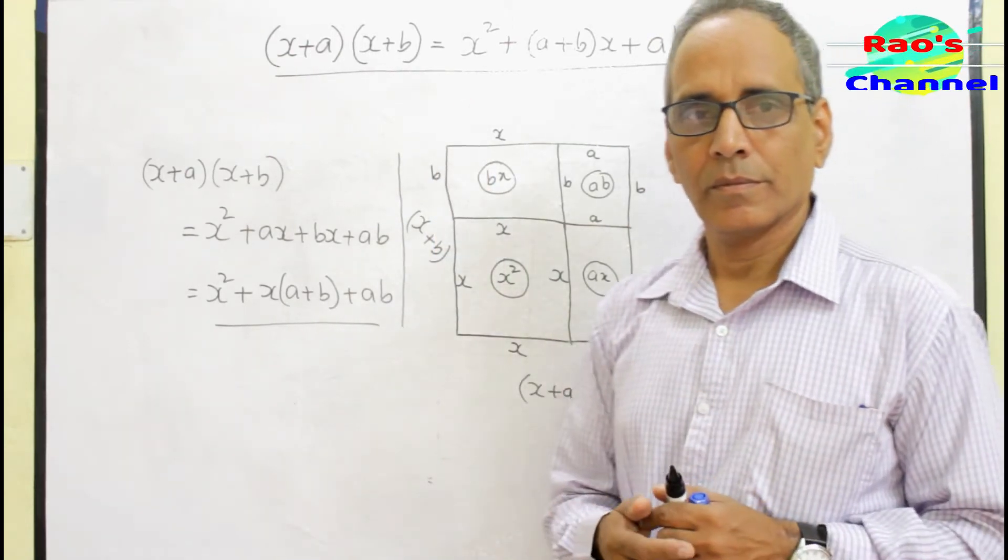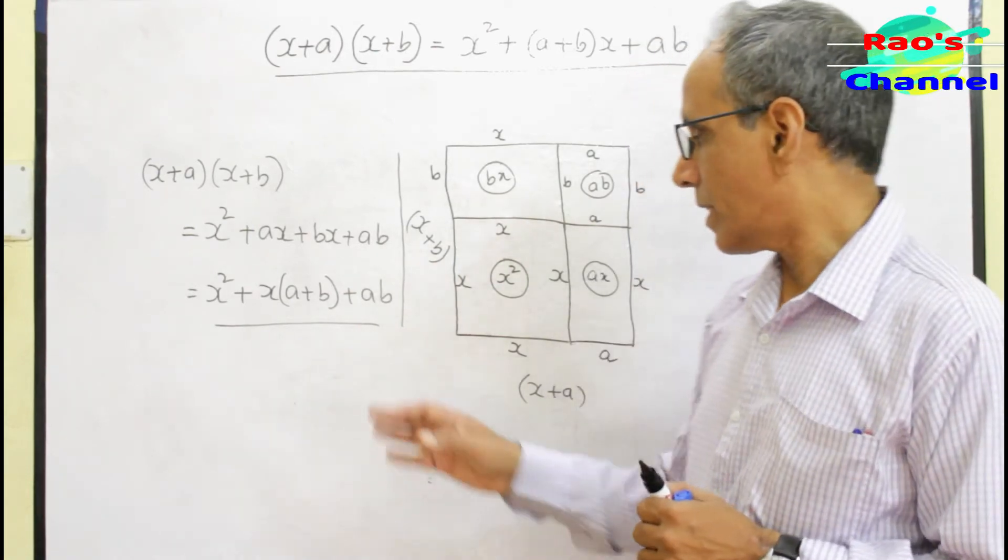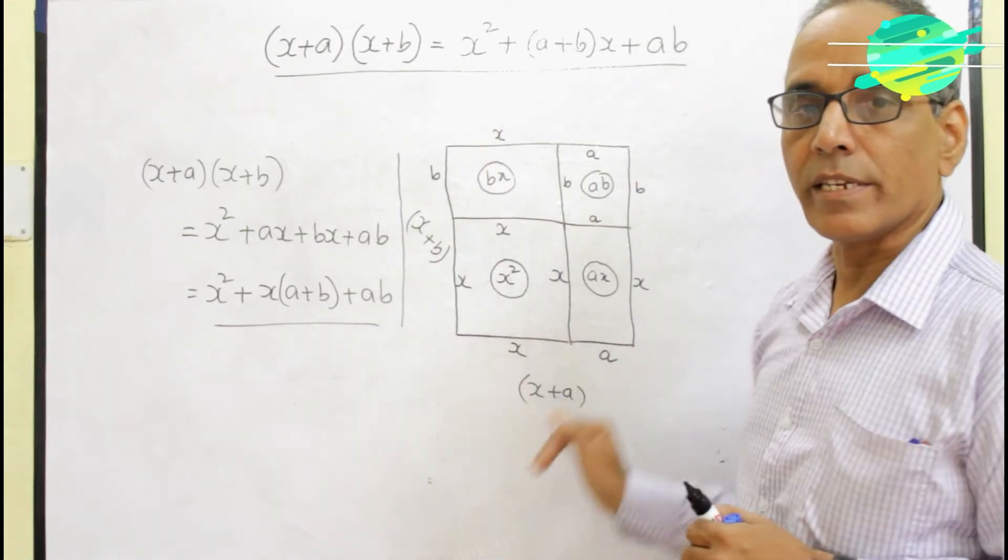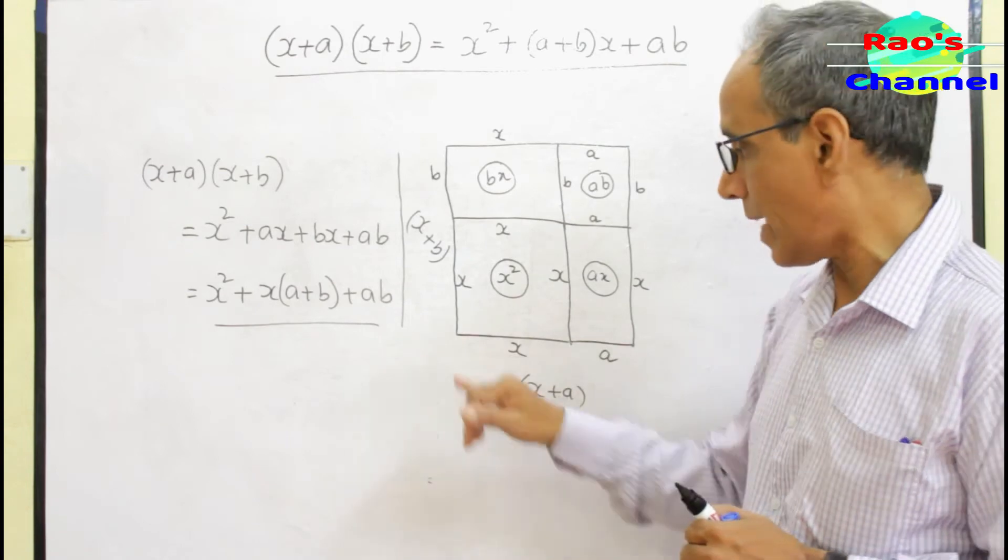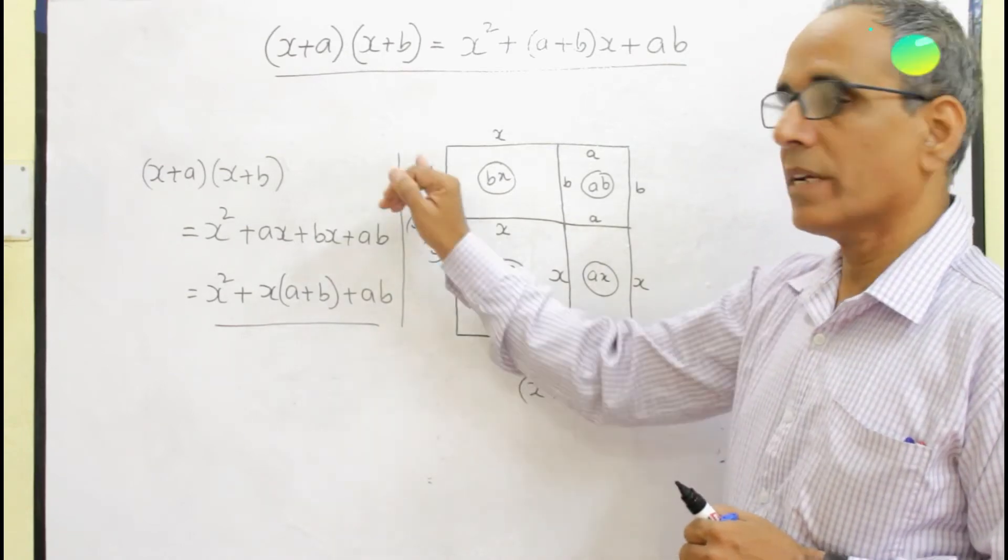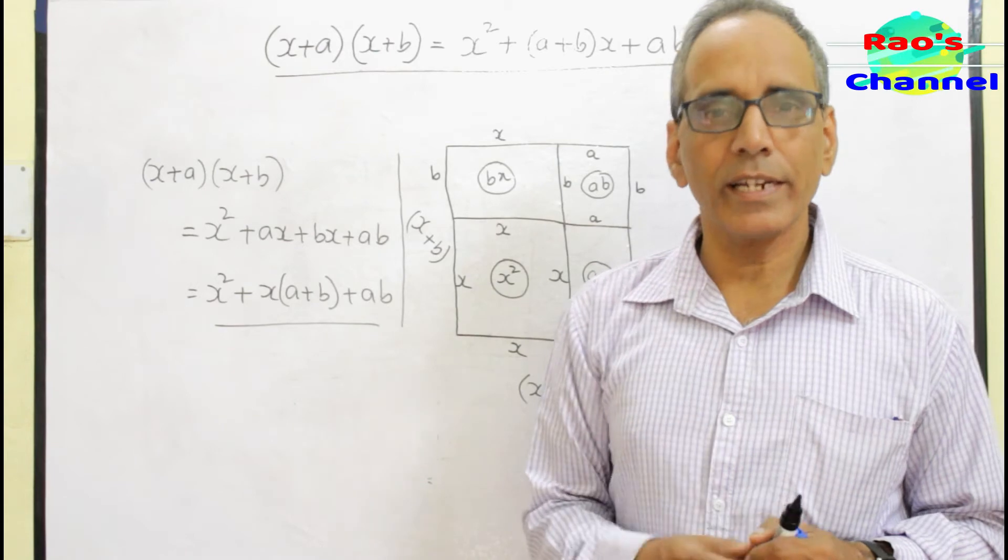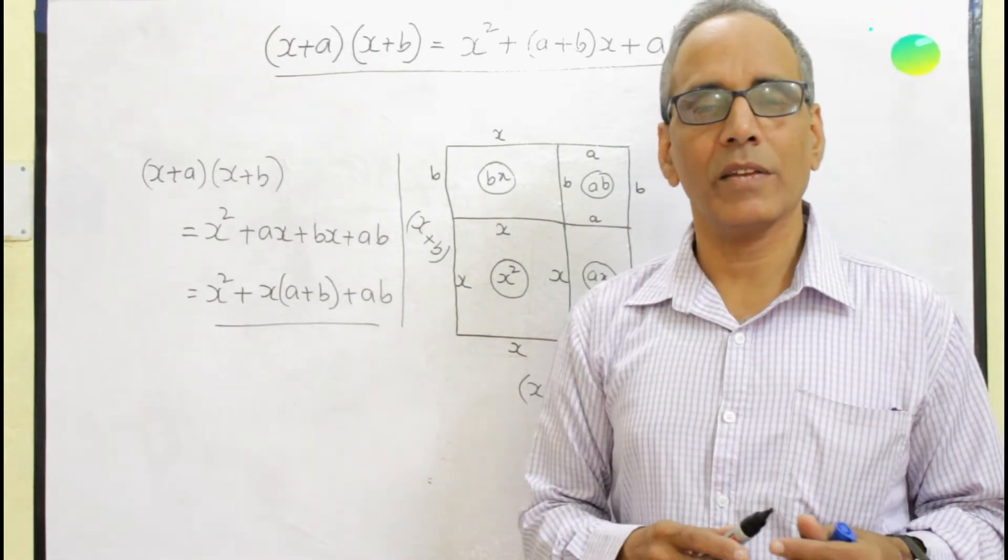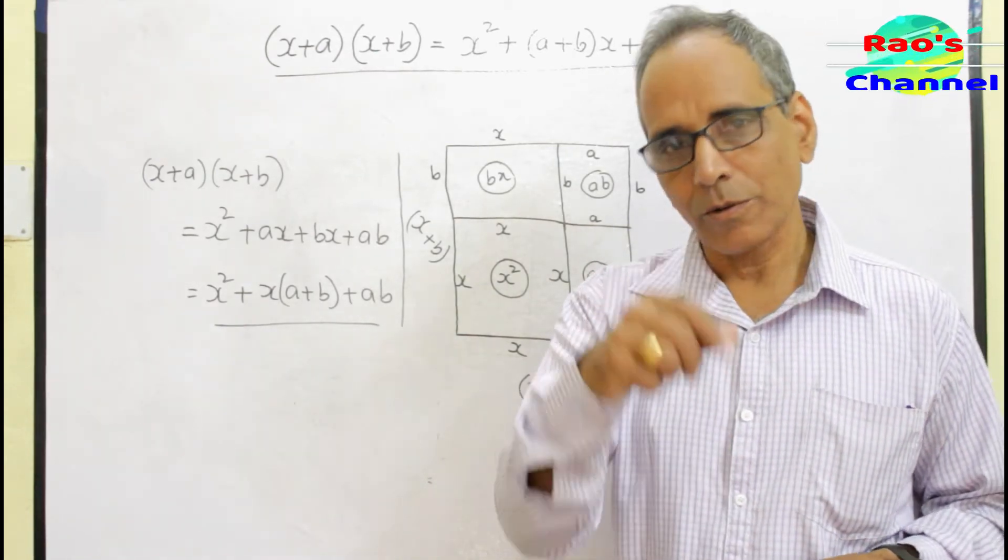Or if I decrease both the adjacent sides by a units and b units - that means (x-a)(x-b) - what is the outcome? Just try and experience, enjoy by deriving the identities by yourself.